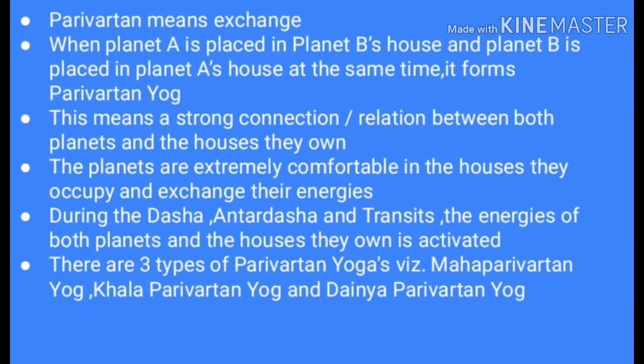In other words, let us assume that Saturn is placed in the Sun's house and the Sun is placed in Saturn's house. This forms a Parivartan Yoga between Saturn and the Sun. There is a strong connection between both planets and the houses they own. Both planets are extremely comfortable in the houses they occupy and exchange their energies. During the Dasha, Antar Dasha, or transit of Shani or Surya, both planets come into action and the houses owned by both are activated simultaneously. So if you are undergoing Shani Dasha, even the effect of the Sun will come into play, because they have mutually exchanged their houses.